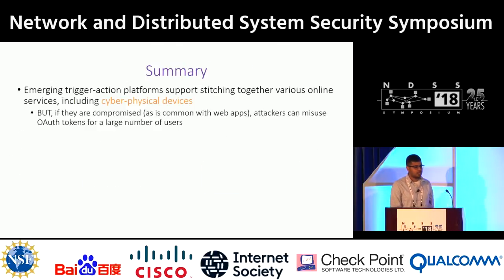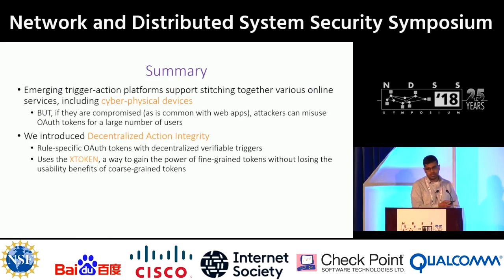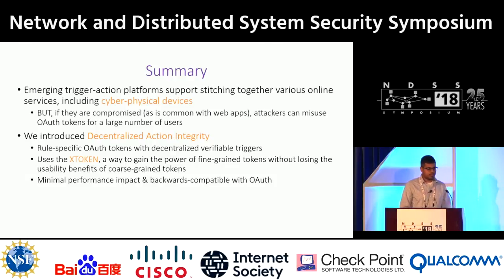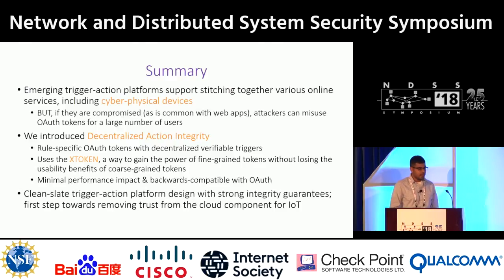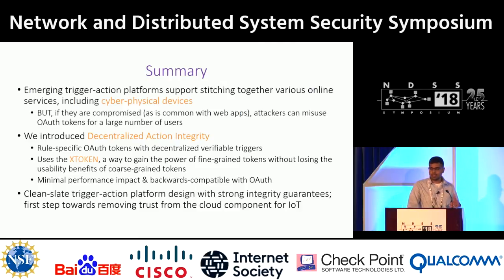In summary, these emerging trigger action platforms stitch together various cyber-physical services, but they pose a long-term, large-scale threat if compromised. What we have shown is the decentralized action integrity principle, which gives strong integrity guarantees and is based on the notion of verifiable triggers and X tokens. The performance impact is quite minimal, so it's a practical system, and this represents a first step toward a clean-slate redesign of IoT platforms and de-privileging the cloud as used in current IoT systems.